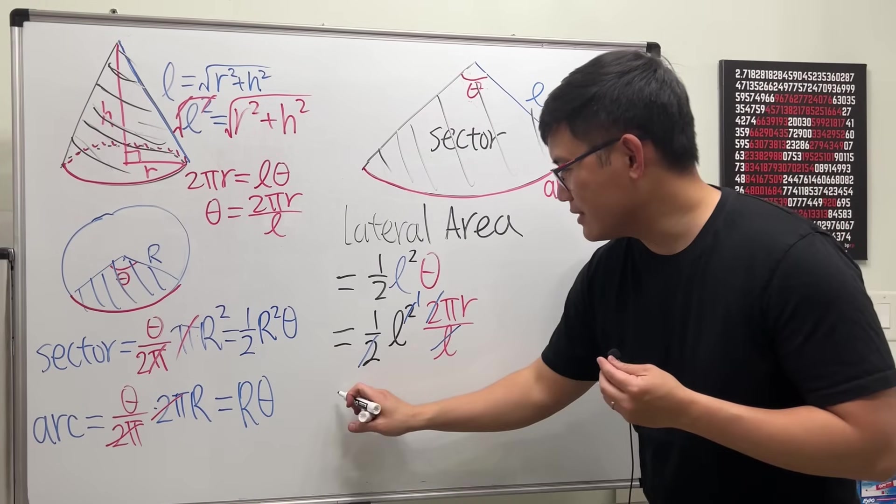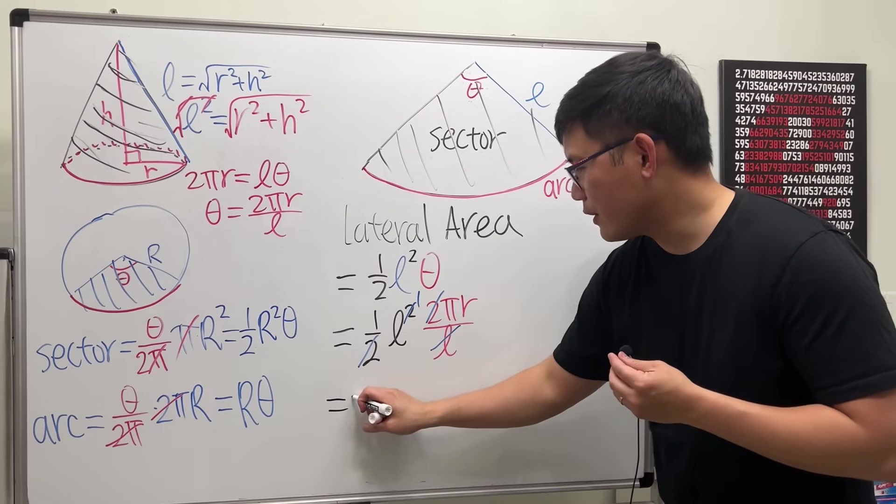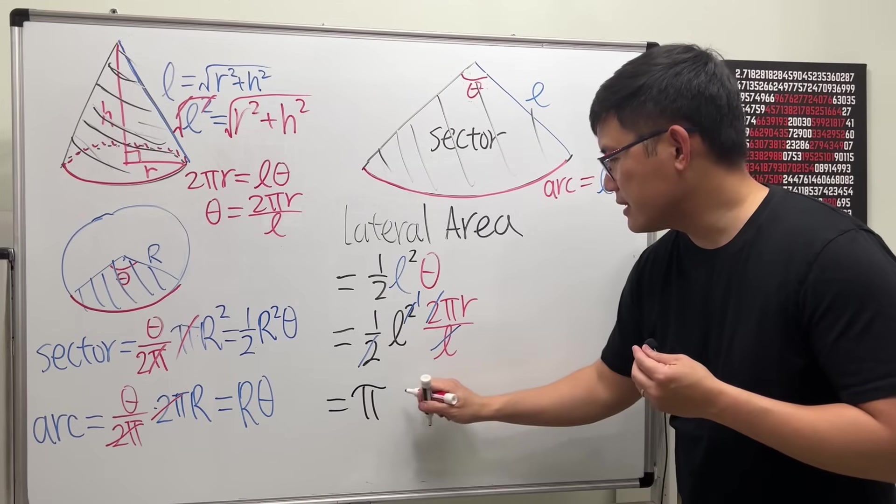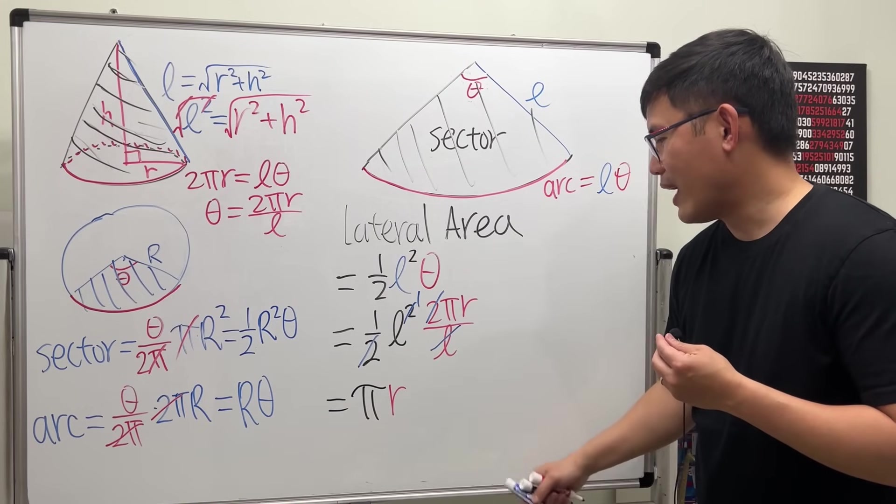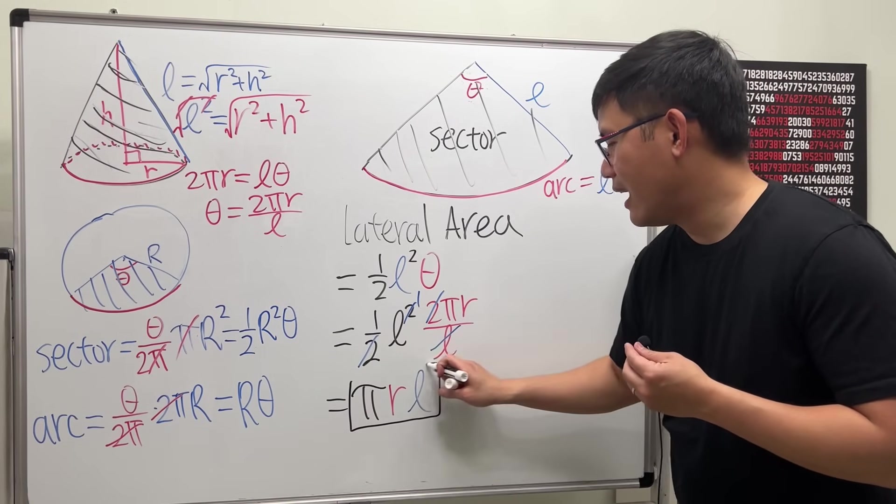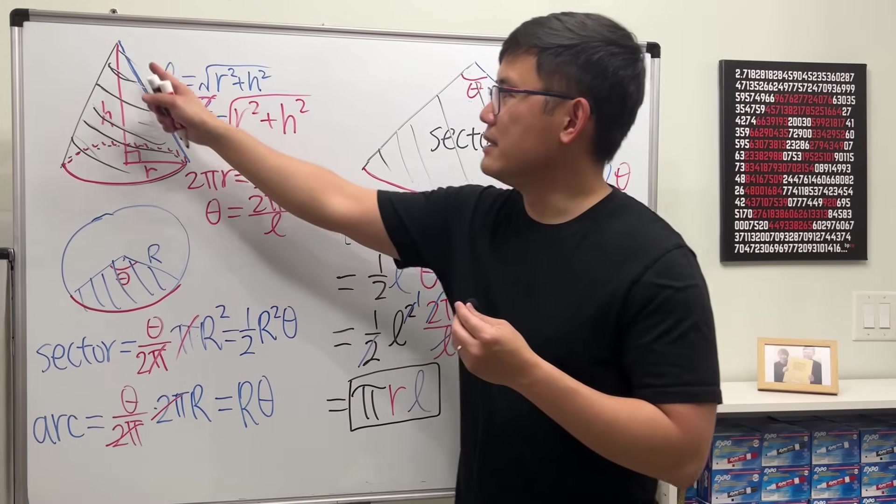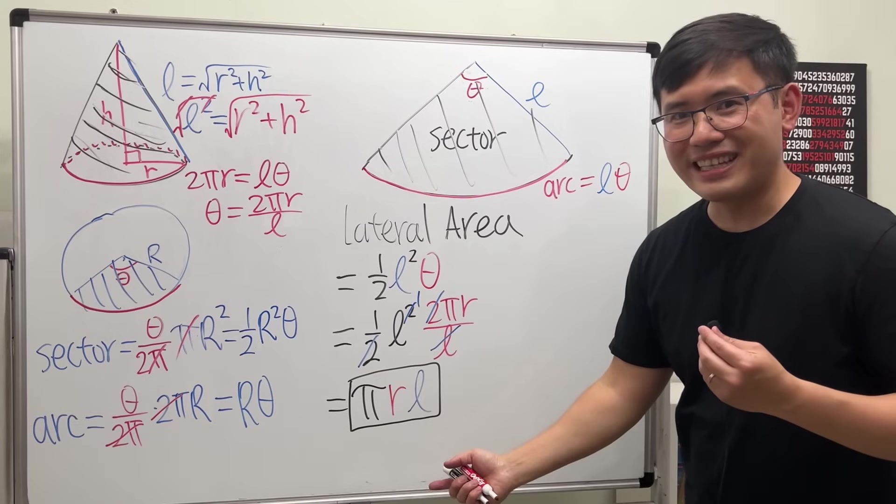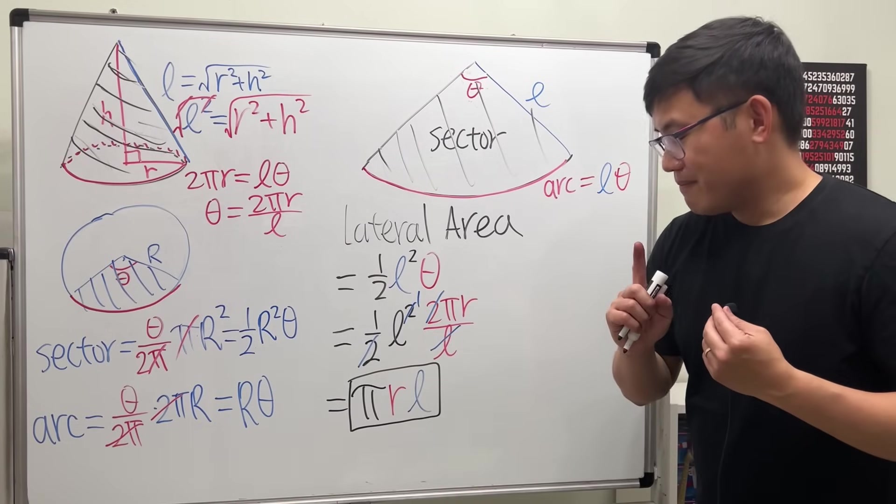So ladies and gentlemen, this right here simplifies to, let's put down the pi first, and then r next, and then L right here. So pi r L. L is the slanted height. Just like that. That's pretty much it.